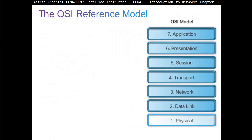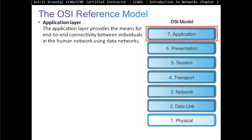The OSI reference model has seven layers. We start with layer 7, the application layer. The application layer provides a means for end-to-end connectivity between individuals in the human network using data networks. We start at layer 7 because that's where we are — when we click something or open something, the first interaction through the network is the application layer. If you open Notepad, you don't go through the network layers. But if you open a web browser or email, you are accessing the network and it goes through the layers. The job of the application layer is to identify what kind of application you're using to access the network.